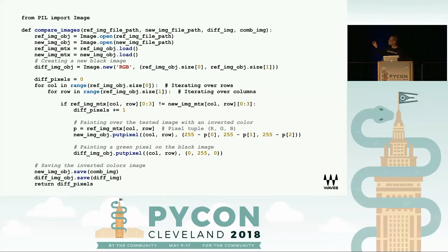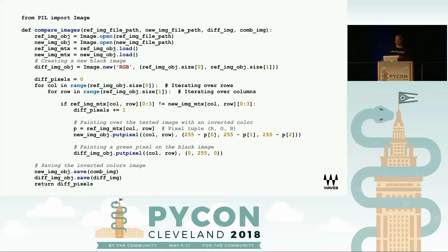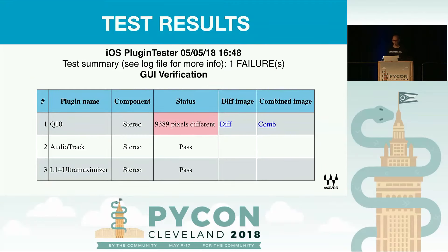The comparison function is pretty straightforward. What it does is it opens the two images as a bitmap pixel matrix with each pixel represented by an RGB tuple — basically a number between 0 and 255 representing color for R, G, and B. We iterate through every row and every column in the photo, and we check if the color of the pixel is the same based on our reference. If it's not, then we take the black image and paint a green pixel, and we take the original photo and paint an inverted color on that location.